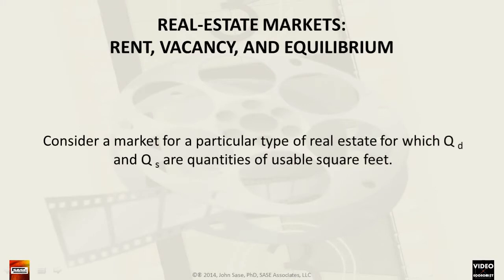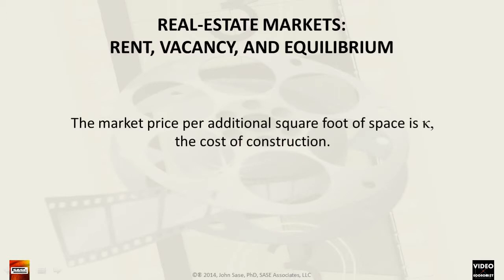To begin, let's consider a real estate market for a specific kind of property. This real estate may be for residential, industrial, commercial, or a number of other uses. For any of these markets, we will consider the real demand, large Q sub D, and the real supply, large Q sub S, in quantities of usable square feet. If the available square footage is not sufficient, additional quantities can be added at a market price notated as small Greek letter kappa for the cost of production. In effect, this cost for an additional square foot is a marginal cost.